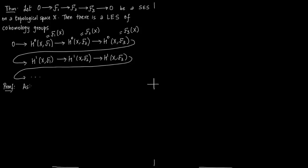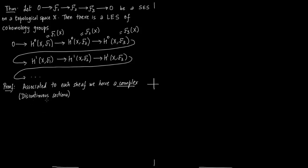Let us write down the proof. Associated to each sheaf F₁, F₂, and F₃ we have the resolution in terms of sheaves of discontinuous sections, as shown in a previous slide. So we have a complex for each sheaf. For example, with F₁ we have 0 → D⁰(F₁)(X) → D¹ → D² → and so on. Everything here is associated with F₁; I am just not writing F₁ further to avoid clutter.